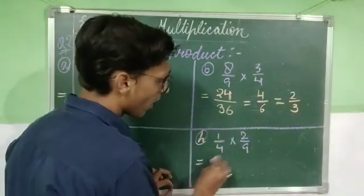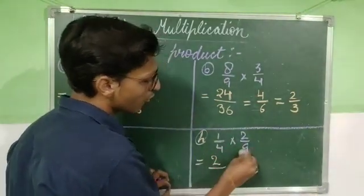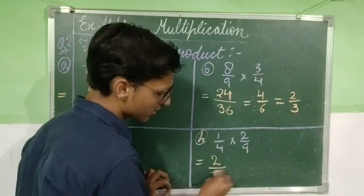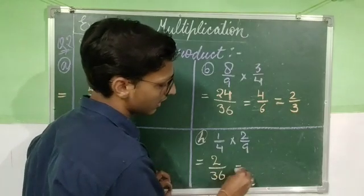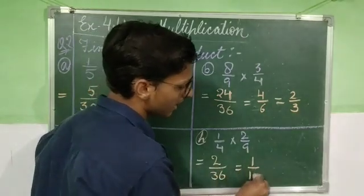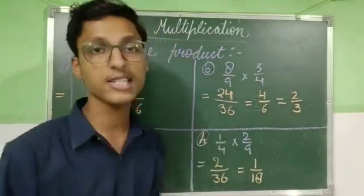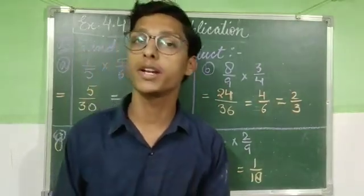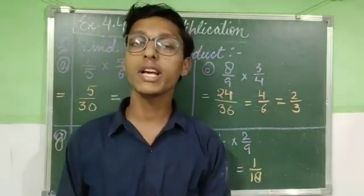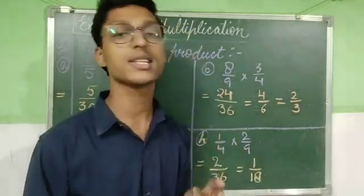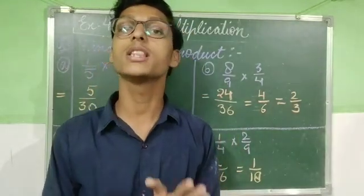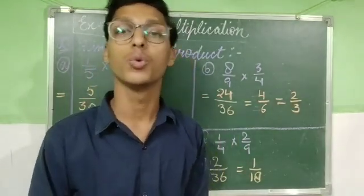For the next parts: 1 twos are 2 and 9 fours are 36, giving 2/36. Since 2 and 36 are both divisible by 2 — or we can say both come in the table of 2 — we simplify to get 1/18.